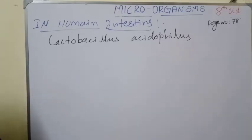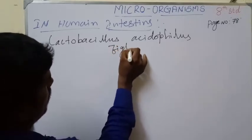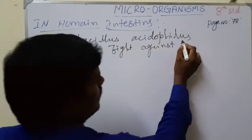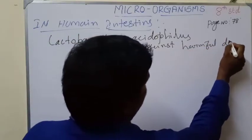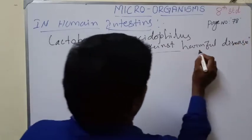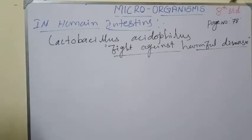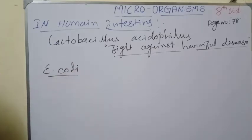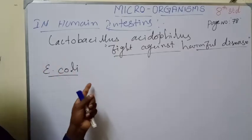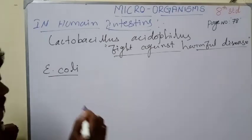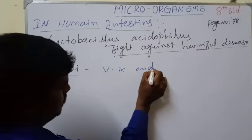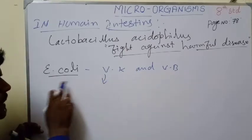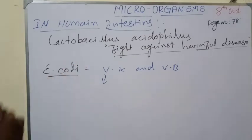Another microbe present in the human intestine is E. coli. E. coli is also present in the human gut and its function is the synthesis of vitamins K and B. E. coli bacteria is responsible for synthesizing vitamin K and vitamin B inside the human body.